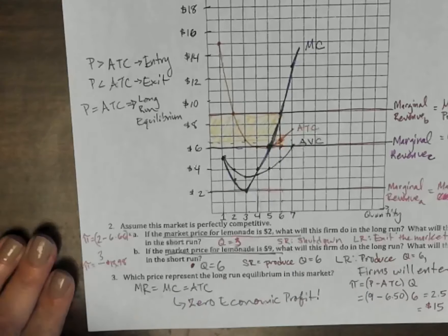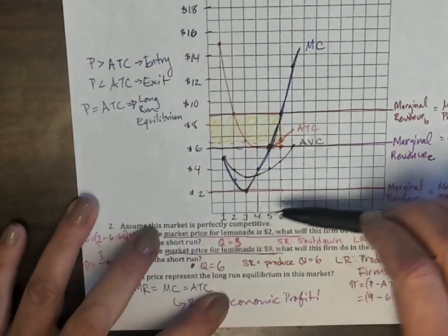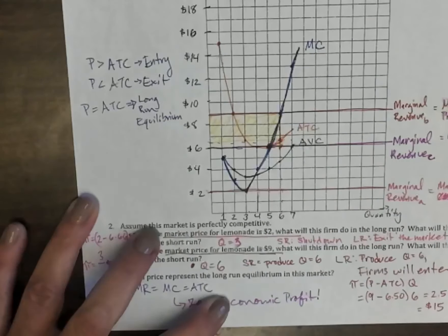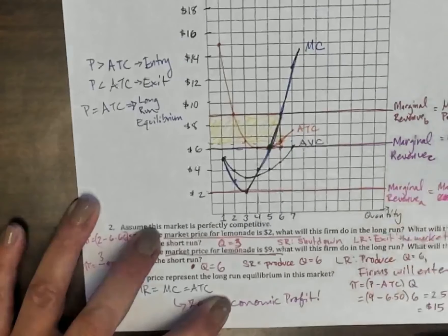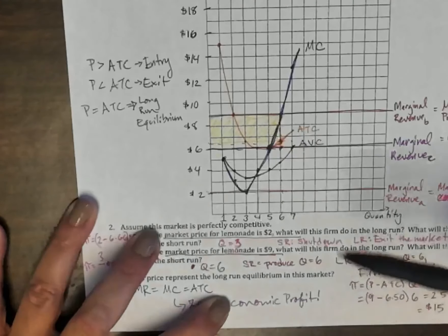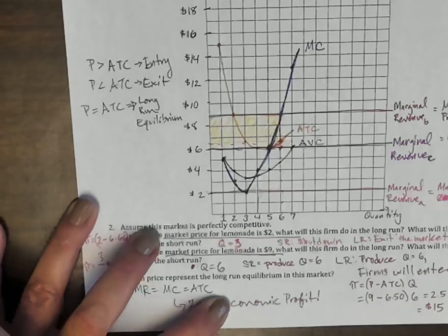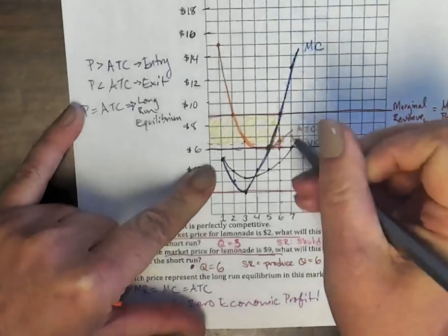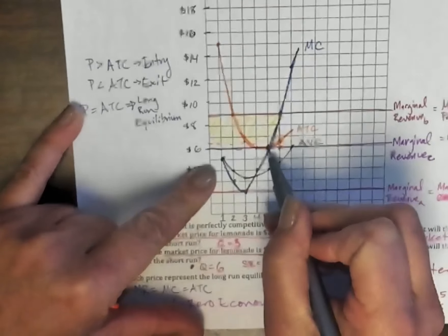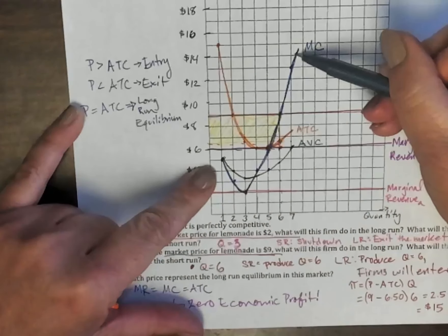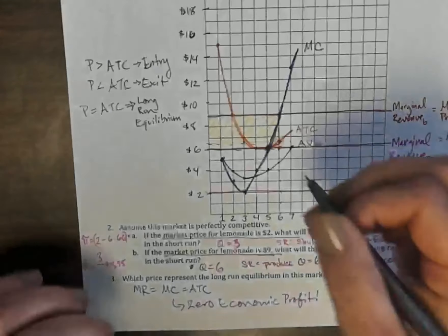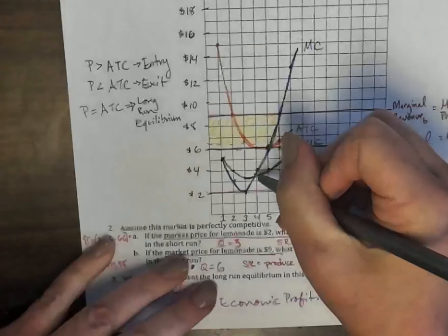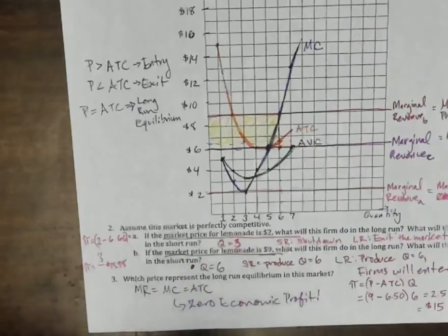The marginal cost curve functions as a supply curve: when marginal revenue goes up, quantity supplied goes up. Given a price, marginal cost tells a firm how much to produce — so that is the firm's supply curve. In the long run, the firm won't produce if price is below average total cost, but above that point this is the firm's supply curve. In the short run, any price above average variable cost is where the firm would produce, making the marginal cost curve that firm's supply curve.